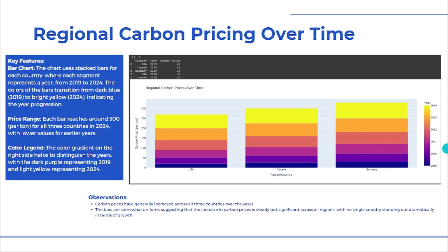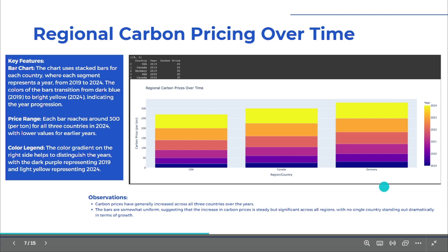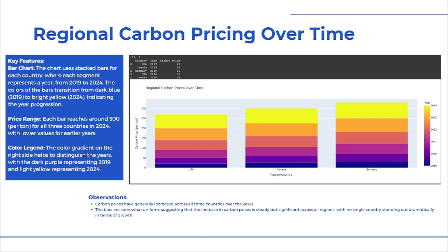For regional insights, carbon prices have increased steadily across regions. By 2024, major countries are approaching $300 per tonne, with Europe in particular showing higher prices. The global distribution world map highlights regional variations, with North America generally having lower carbon prices and Europe having higher prices.